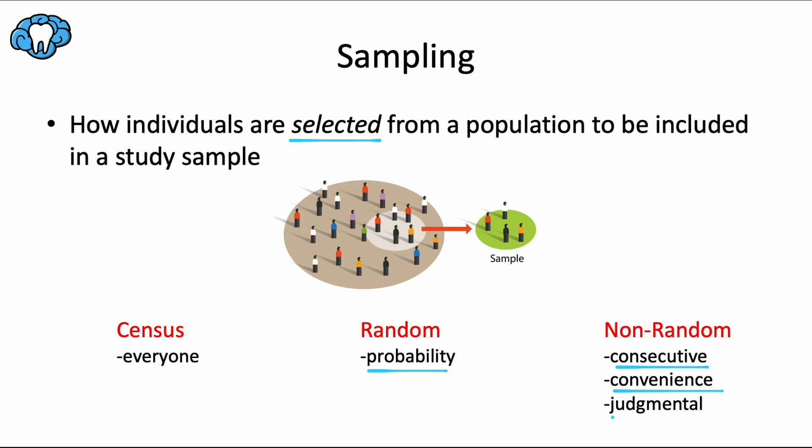Lastly, we have the judgmental sample. This is where you have purposeful selection of individuals by the investigator. For example, you might intentionally select easy to work with people, or patients who demonstrate the best compliance with wearing clear aligners. This is the worst of the non-random, because there's a lot of bias in your selection of subjects, and that sample will be least representative of the entire target population you're trying to investigate and draw conclusions about.